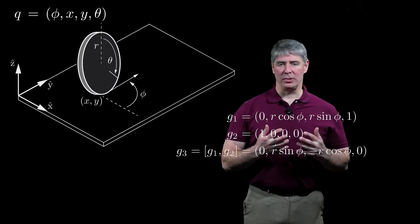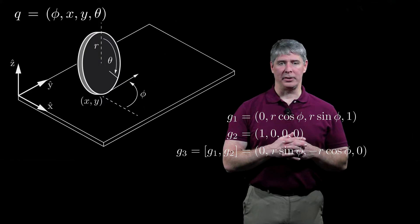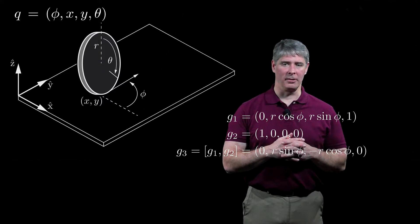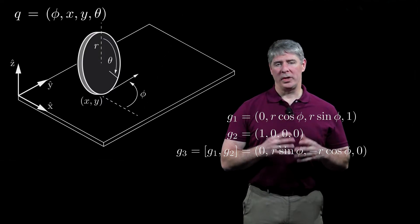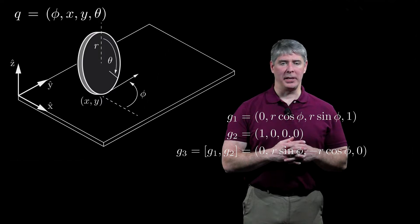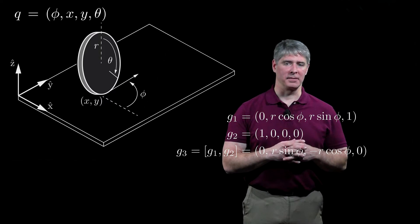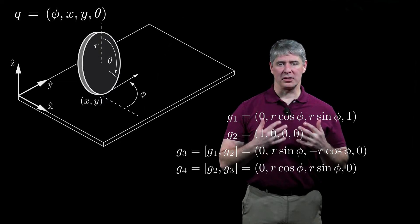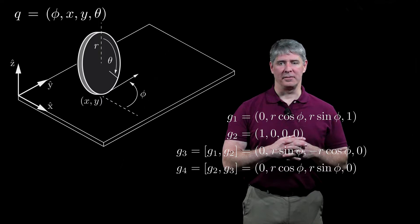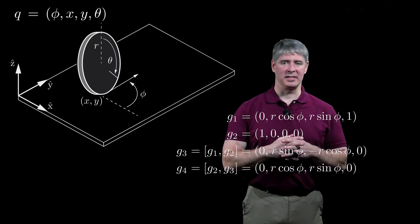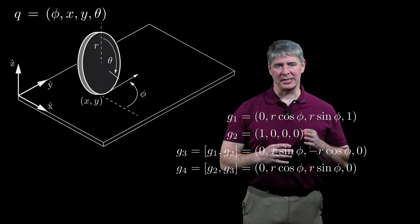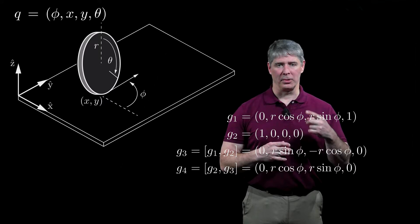The degree 2 Lie bracket is g3 = (0, r sine phi, minus r cosine phi, 0), which corresponds to sliding sideways. We need at least one more Lie bracket to span the four-dimensional space of velocities, so we construct the degree 3 Lie bracket of g2 and g3, which is (0, r cosine phi, r sine phi, 0), corresponding to sliding forward without changing the rolling angle theta.